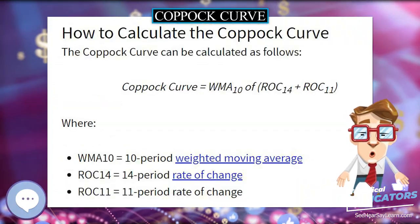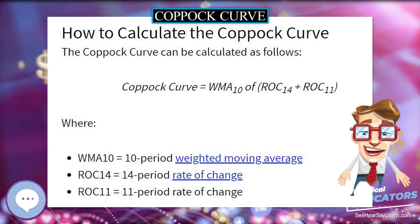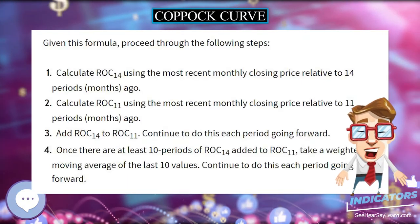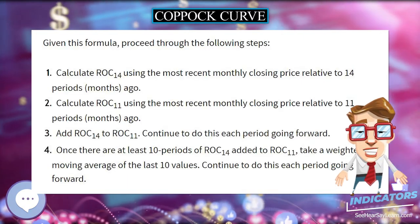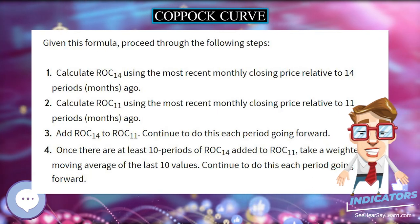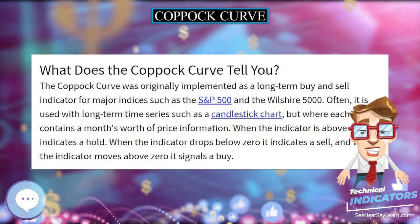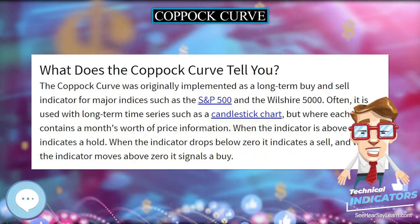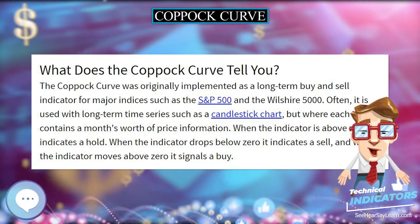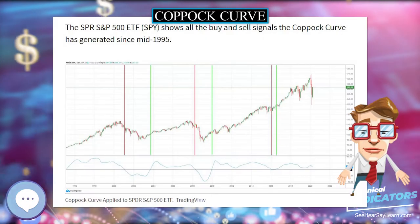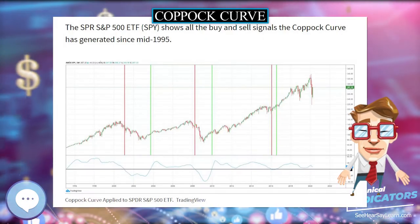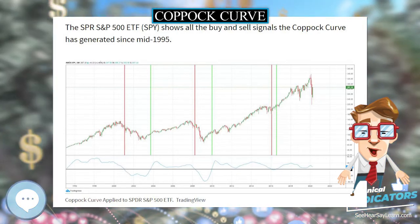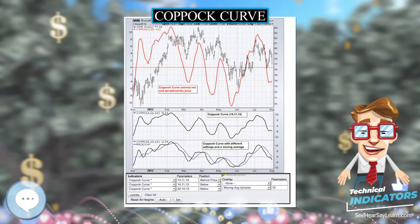A buy signal is generated when the indicator is below zero and turns upward from a trough. No sell signals are generated, as that is not its design. The indicator is trend-following and based on averages, so by its nature it doesn't pick a market bottom, but rather shows when a rally has become established.